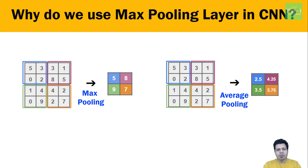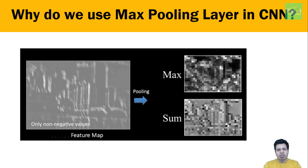In sum pooling, we simply take the sum of values. Max pooling helps extract low-level features like edges and points, while average pooling identifies smoother features. If we apply max pooling on the image obtained after a ReLU operation, we can see that the spatial size of the image has reduced. Max pooling also reduces the number of parameters and computations in the network, helping control overfitting, and makes the network less sensitive to small distortions and transformations. This makes max pooling very powerful, since we can detect objects in an image regardless of where exactly they are located.